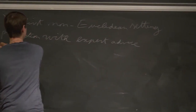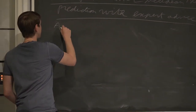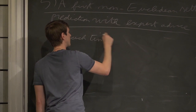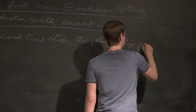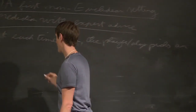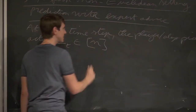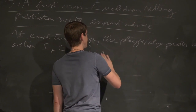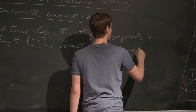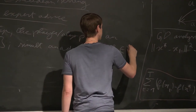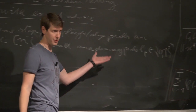It's in the same philosophy as the online convex optimization I just told you about before the break. So at each time step, the player — the algorithm — picks an action, denoted by i_t in 1 through n. There are n possible actions, and at the same time, simultaneously, an adversary picks a loss vector L_t in [0,1]^n. L_t plays the role of my convex function before, which is changing at every time step.